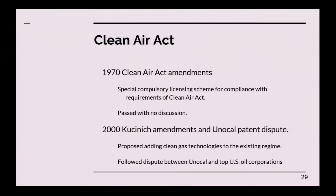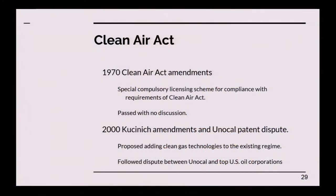The Clean Air Act amendment works similarly to the atomic energy compulsory license — you apply to the government for a compulsory license on clean air technologies, there's a brief hearing, and you get the compulsory license if you prove you need it. In 2000, Dennis Kucinich proposed amendments following a patent dispute between top U.S. oil corporations and Unocal, which had developed a clean gas technology and was going through an FTC case over anti-competitive actions. Kucinich proposed an amendment that would solve the problem by allowing compulsory licenses on Unocal's patents.